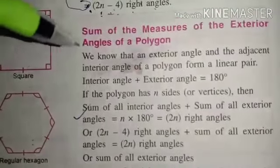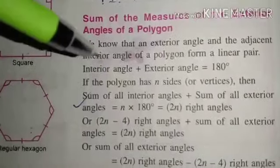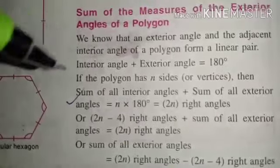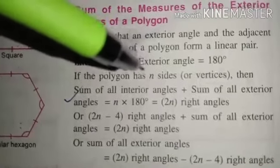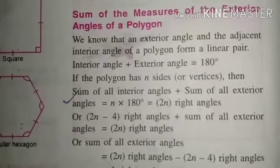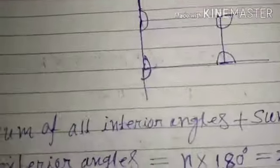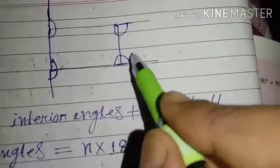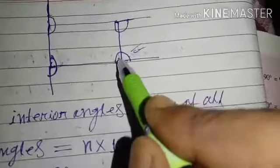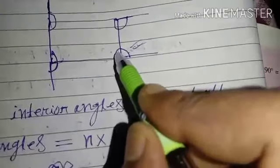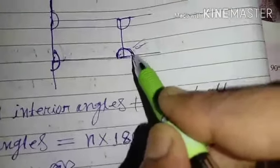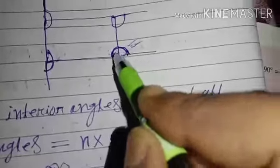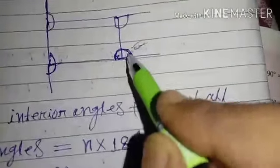We know that an exterior angle and an adjacent interior angle of a polygon form a linear pair. So, interior angle plus exterior angle equals 180. This is the exterior angle and this one is the interior angle. If you add these two angles, then you will get 180 because these two angles are forming a linear pair.